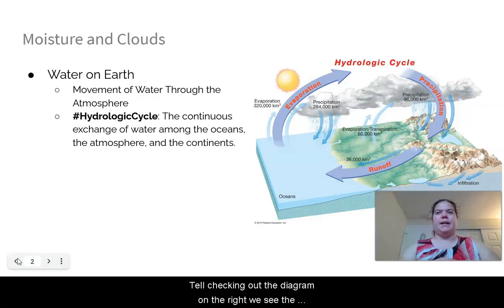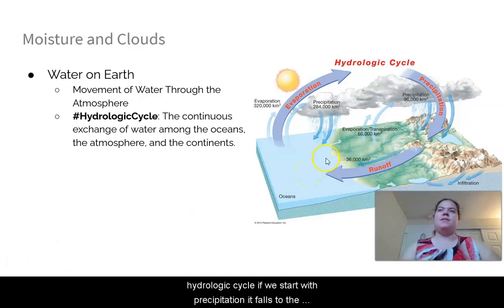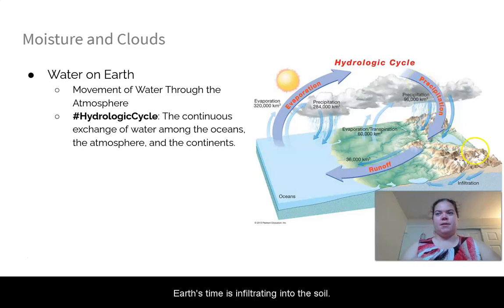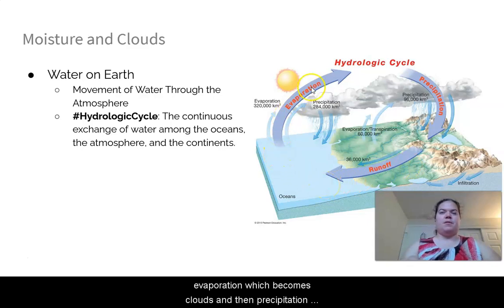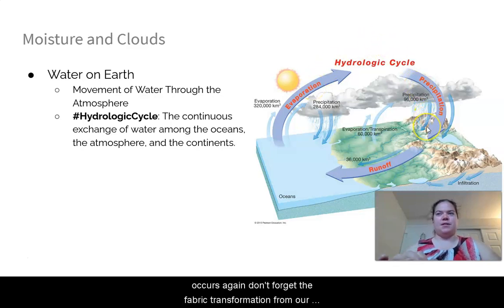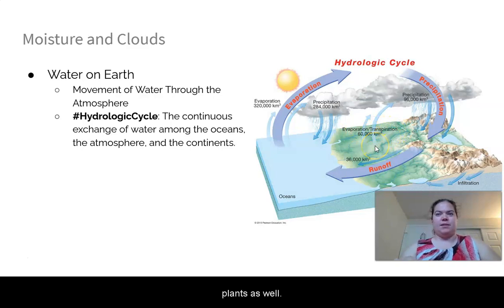Checking out the diagram on the right, we see the hydrologic cycle. If we start with precipitation, it falls to the earth — some is infiltrated into the soil, most runs off into the oceans, which then becomes evaporation, which becomes clouds, and then precipitation occurs again. Don't forget evapotranspiration from plants as well.